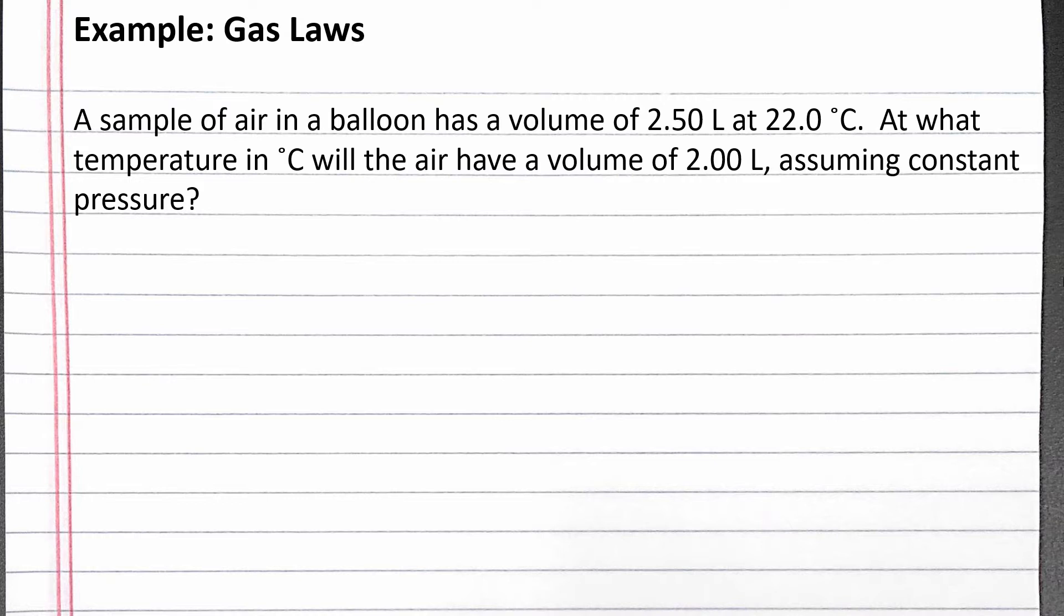Our problem reads: a sample of air in a balloon has a volume of 2.50 liters at 22.0 degrees Celsius. At what temperature in degrees Celsius will the air have a volume of 2.00 liters, assuming constant pressure? We can start with the combined gas law.